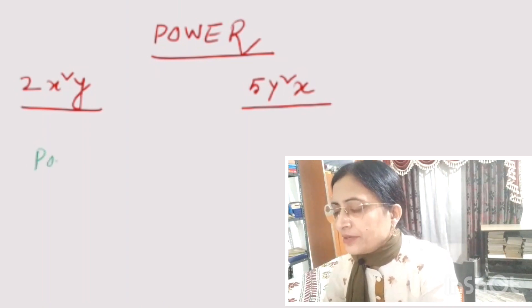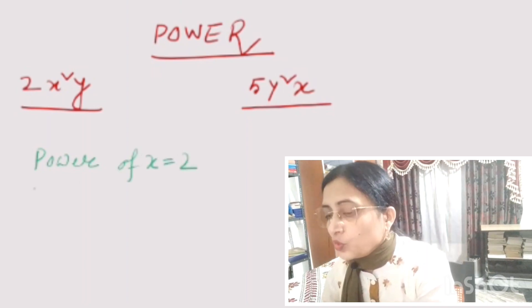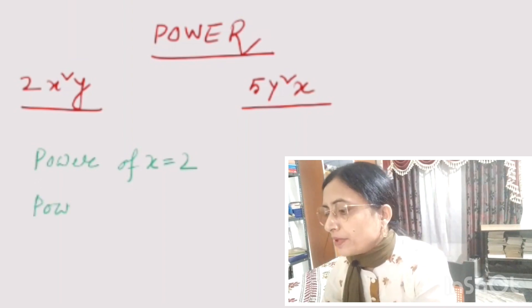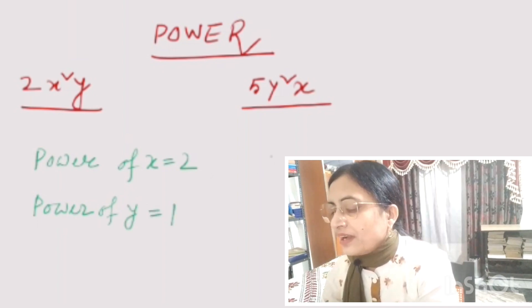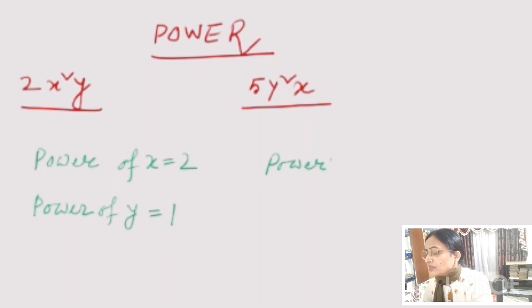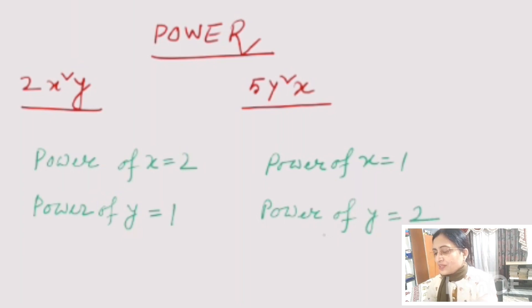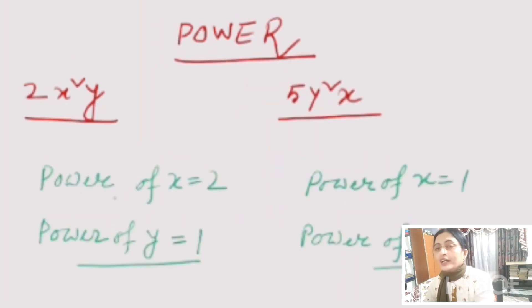In the first term, variables are x and y. The power of x is 2 and the power of y is 1. In the second term, 5y²x, the power of x is 1 and the power of y is 2. So in both cases the variables are x and y, but the power of each variable is different.